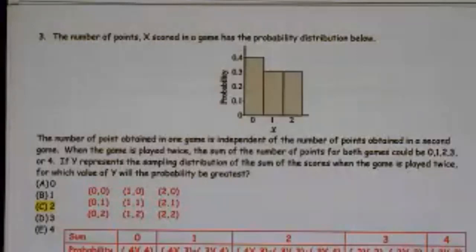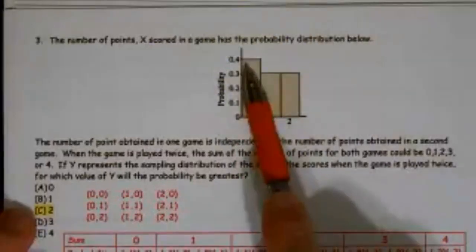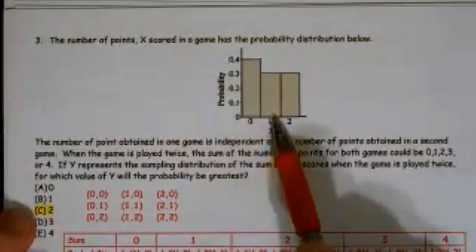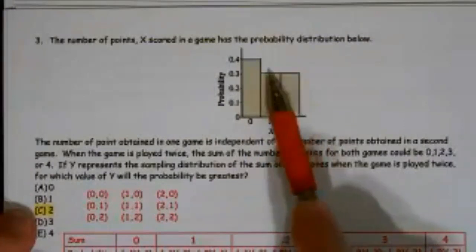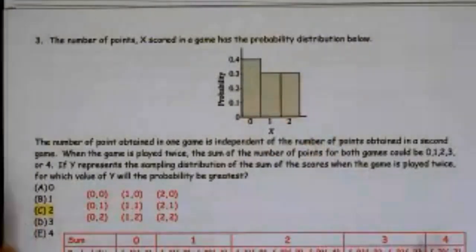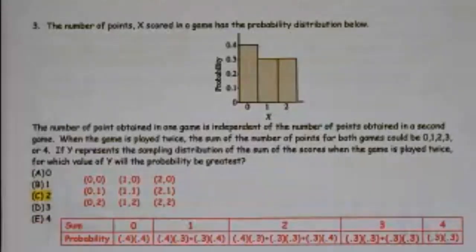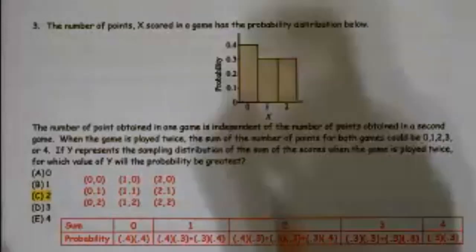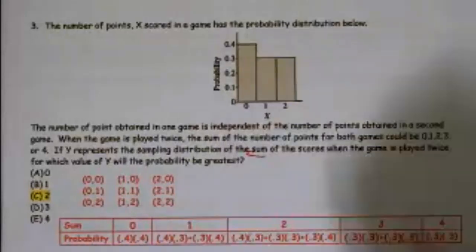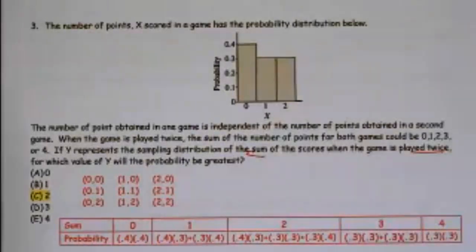So in this case, the number of points scored in a game has a probability distribution below. There's a 40% chance I'm going to be a loser and get no points, there's a 30% chance I'll get one point, and there's another 30% chance I'll get two points. So the number of points obtained in one game is independent of the number of points in a second game.